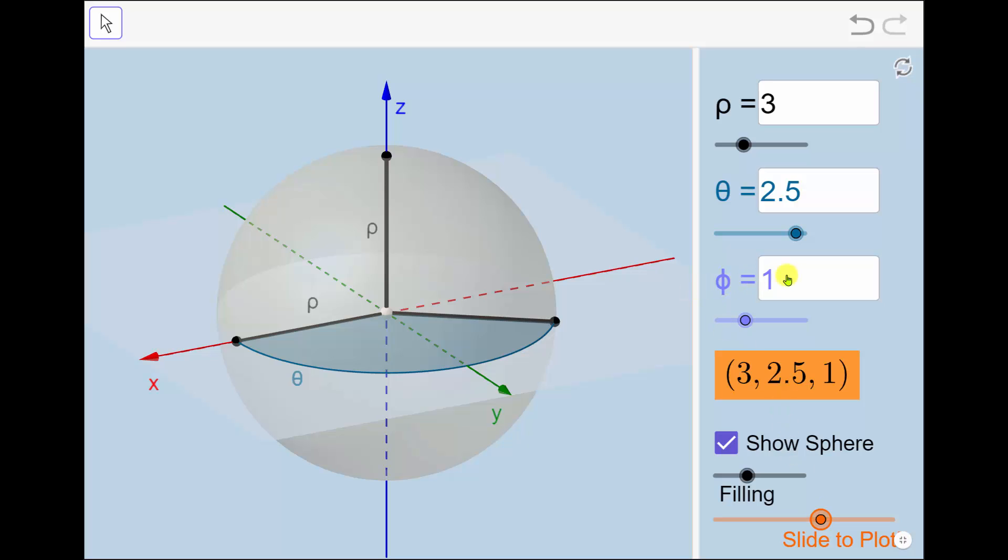And finally, phi equals one radian, which is the angle between the positive z-axis and the point. This indicates the point is going to be somewhere on this semicircle. And now we rotate one radian from the positive z-axis, which determines the point 3 comma 2.5 comma 1, which is this orange point here.